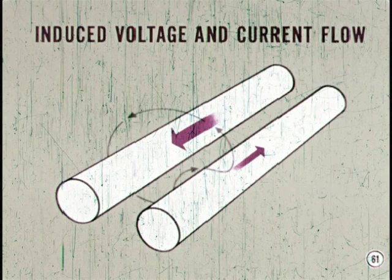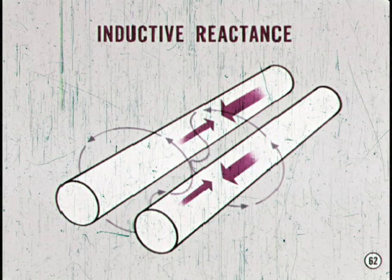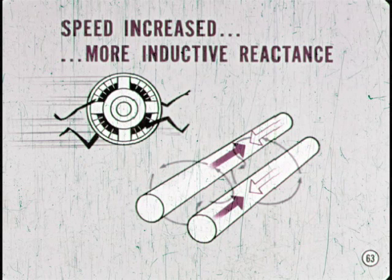The lines of force cutting across the second wire induce a voltage and small current flow in the second wire. But notice, the currents in the two wires are going in opposite directions. Now, in an alternator stator, alternating current is flowing in all windings. Lines of force spread out from each wire and cut across the adjacent wire. This induces a voltage which opposes the original voltage and current flow. This is commonly called inductive reactance. When alternator speed is increased, the output current tries to increase. But since it is alternating current, it changes direction more often and produces more inductive reactance. That's how an alternator controls its own maximum current output.